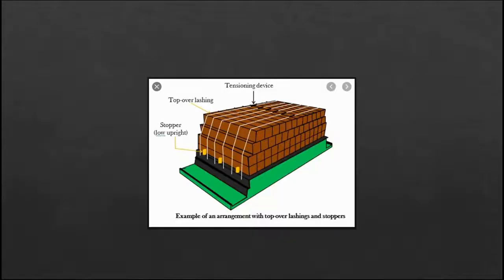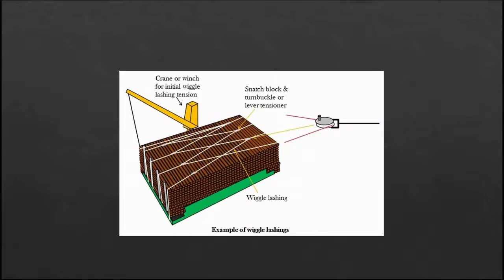The tensioning device — meaning a turnbuckle or any other similar apparatus — is used to induce tension. Cranes are used to tighten the wiggle wires, where one end is secured on the over lashing wire using a bulldog grip, and the other end is pulled using the crane and tightened. Once enough tension is created by the crane, this end is also secured to the over lashing wire, completing the entire lashing arrangement.